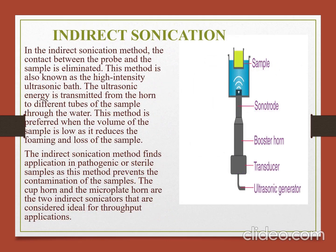In indirect sonication, the contact between the probe and sample is eliminated. This method is also known as high-intensity ultrasonic bath. The ultrasonic energy is transmitted from the horn to the different tubes of the sample through the water. This method is preferred when the volume of sample is low, as it reduces foaming and loss of the sample.